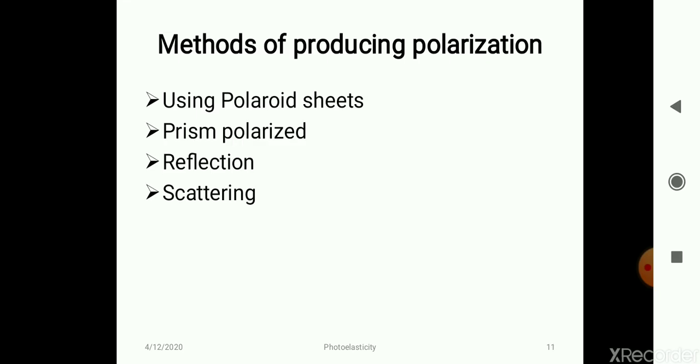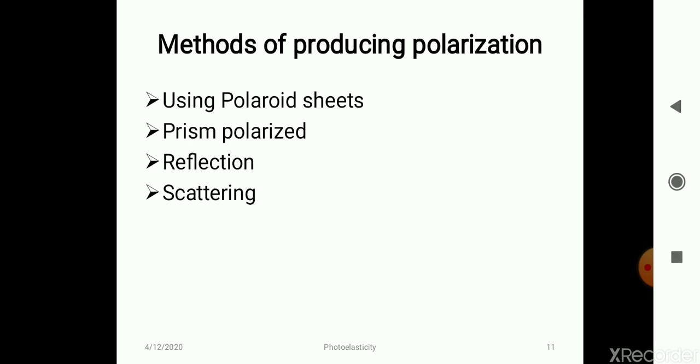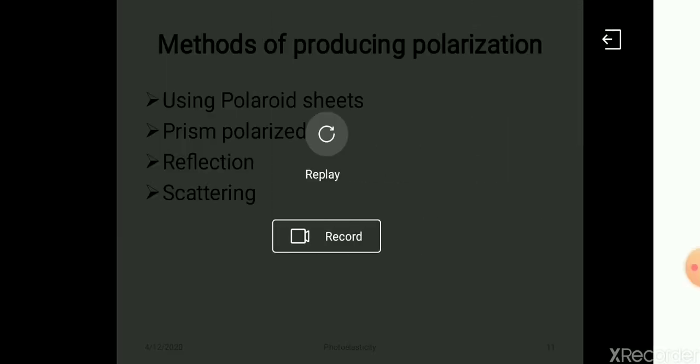Methods for producing polarization: using polaroid sheets you can make polarization, then prism can be used for polarization, reflection can be used for polarization of light, and scattering can also be used for polarization of the light.